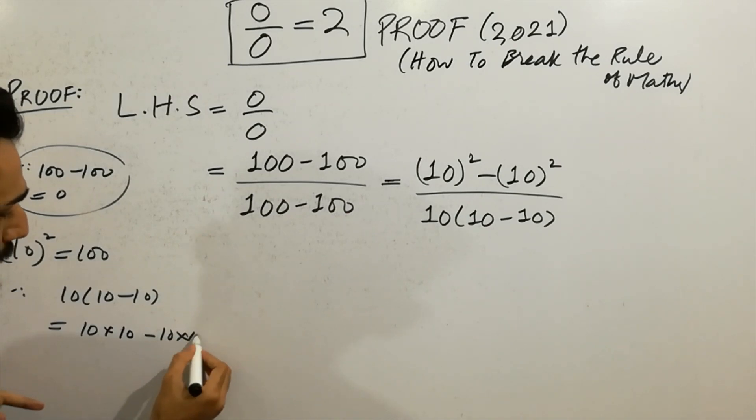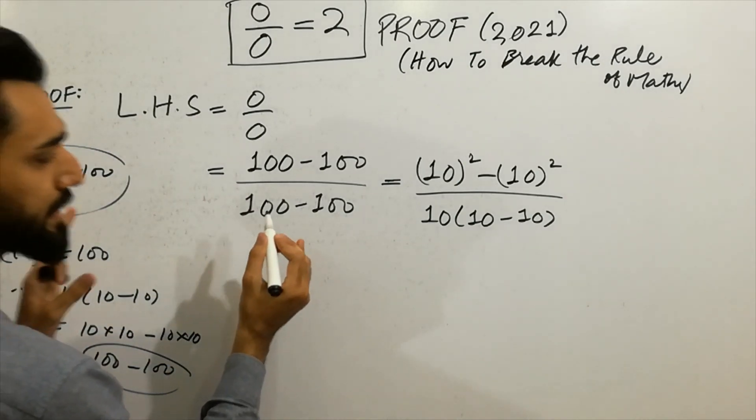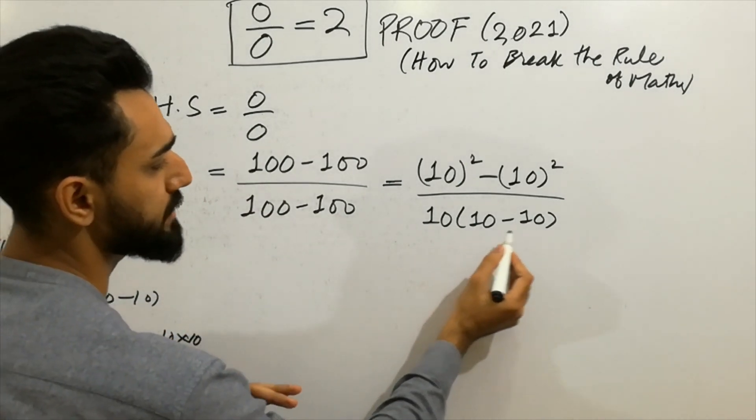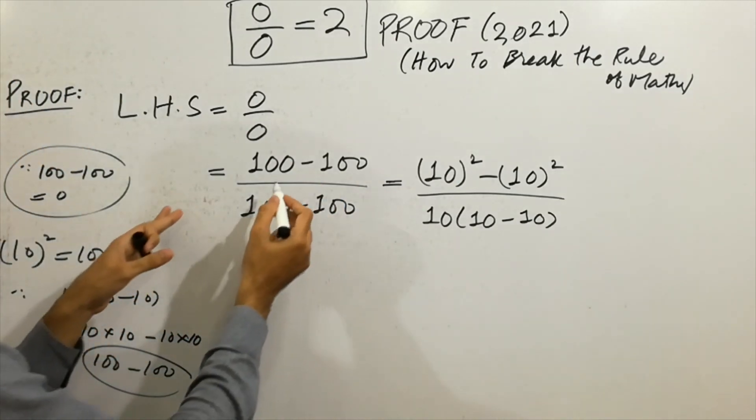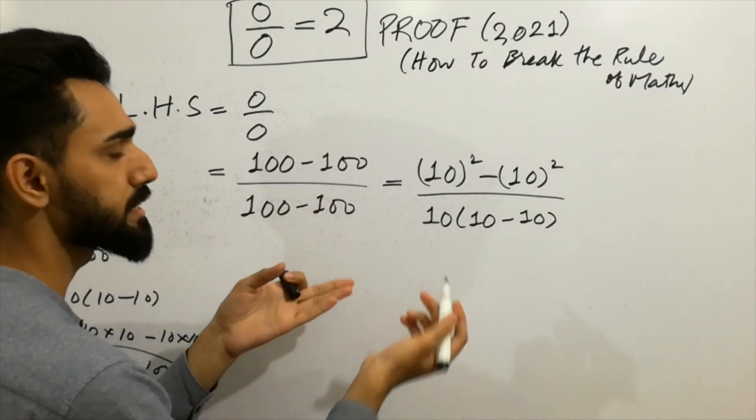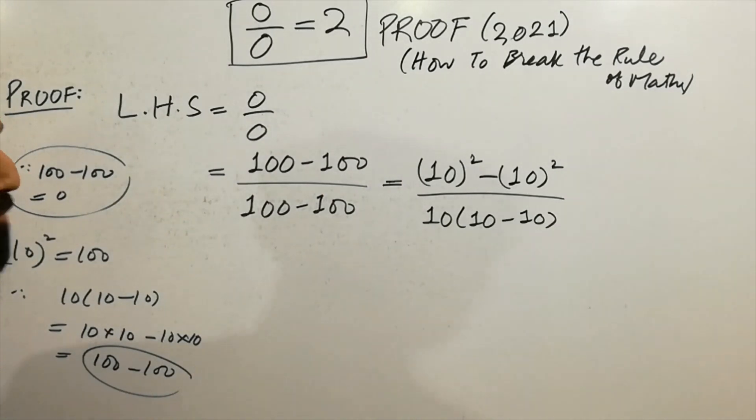10, you can write here 100. 100 as it plus 100 and minus 100. So you can write here 100 minus 10 can be written as 10 bracket 10 minus 10. And similarly, 100 minus 100 can be written as 10 squared minus 10 squared. I hope you have a clear point. Next step.